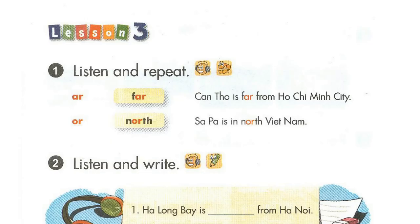Page sixty-eight. Lesson three. Activity one. Listen and repeat. Far. Can Tho is far from Ho Chi Minh City. North. Sa Pa is in North Vietnam.